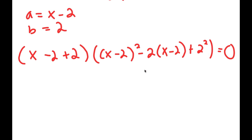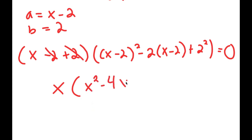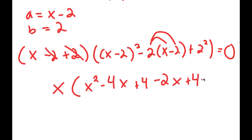Now we can simplify this. Negative 2 and positive 2 cancel out, so I get x times x minus 2 squared, which is the same thing as x squared minus 4x plus 4. Then negative 2 times x minus 2 — distributing the negative 2 gives negative 2x, and negative 2 times negative 2 is positive 4. And finally, I have plus 2 squared, which is equal to 4.